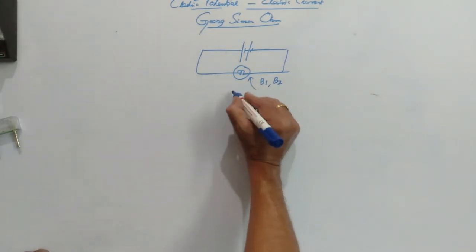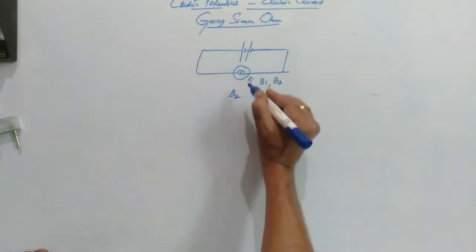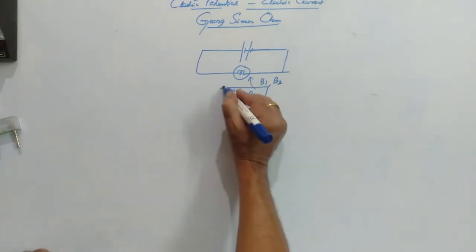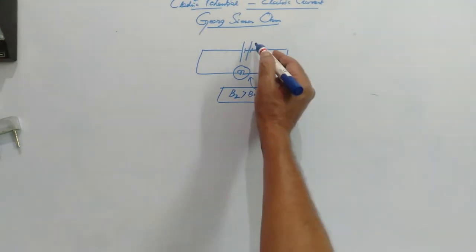So here B2, the brightness in the bulb when two cells are connected, is greater than B1, that is the brightness in the bulb when one cell is connected. So it clearly indicates what we are doing actually here.